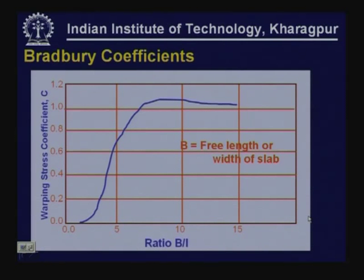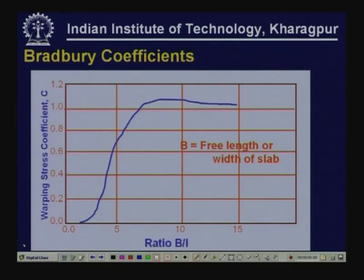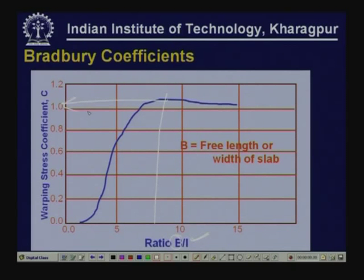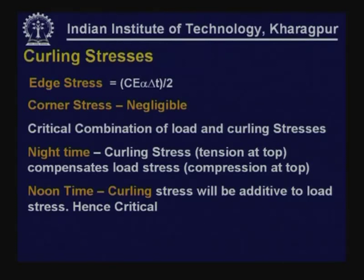Bradbury has given coefficients to find out the value of sigma X and sigma Y depending on the dimension of the slab with reference to the radius of relative stiffness. If you know the dimension of slab — for example LX/L — then we can find the corresponding coefficient CX. Using the expression: coefficient C multiplied by elastic modulus value, coefficient of thermal expansion, temperature gradient divided by 2. In the corner region the curling stress is normally negligible because the restraint provided by self-weight is almost negligible there.